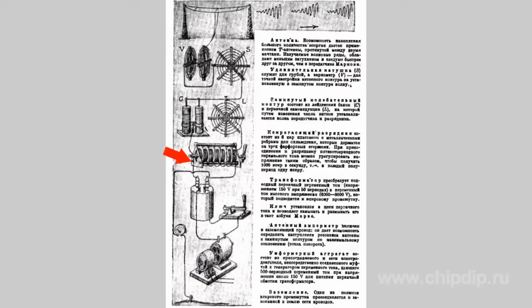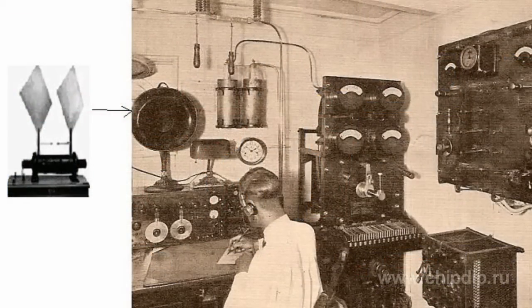One of the poles of the spark gap is connected to the network buried in the ground. During the first and second decades of the 20th century, this structure was the main type of radio transmitter, evolving from rotary designs to become a real communication device used throughout the world.